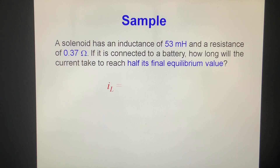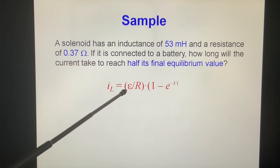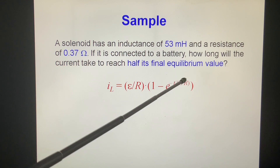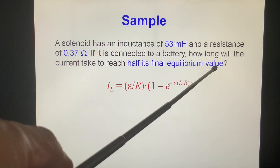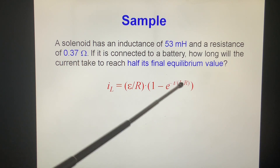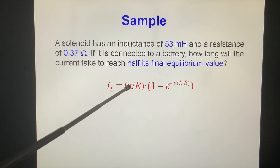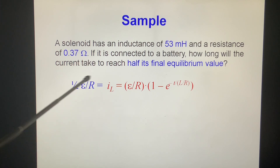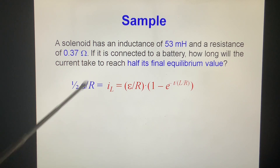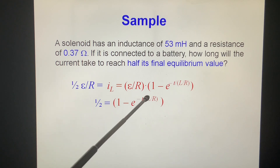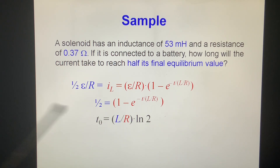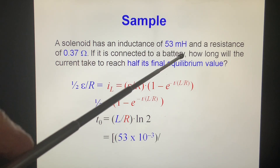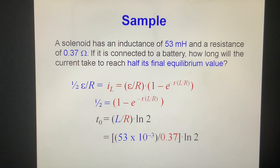The current I equals (epsilon/R)(1 minus e to the minus T over L/R). The final equilibrium value is I_infinity equals epsilon/R. The question asks at what time I equals half the final equilibrium value. Setting up the equation and canceling R, we get 0.5 equals 1 minus e to the minus t. Solving for t: t equals (L/R) times ln 2. Putting in the numbers with L = 53 millihenry, we get t approximately 0.1 seconds.